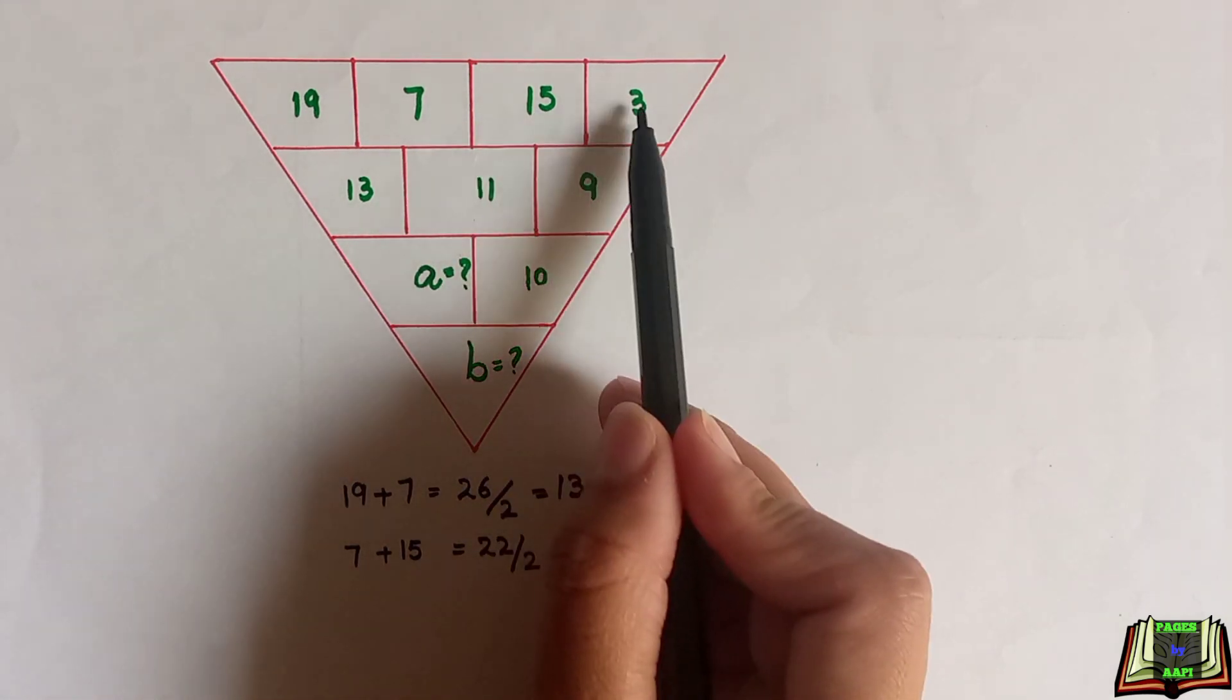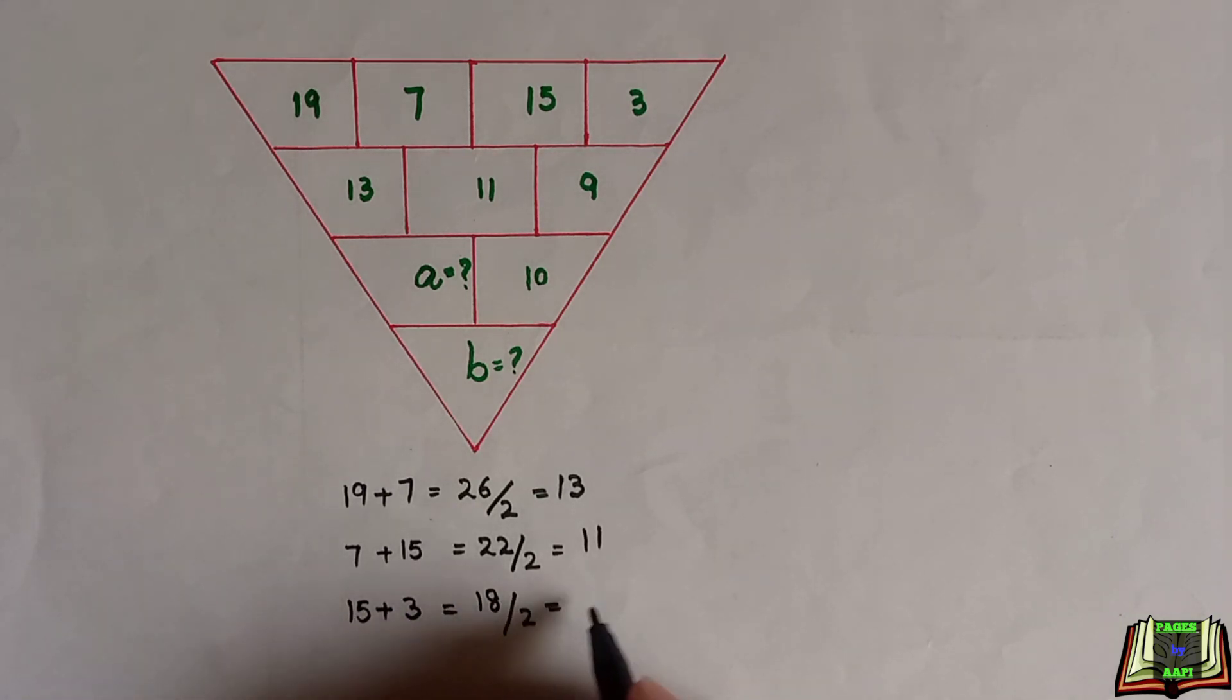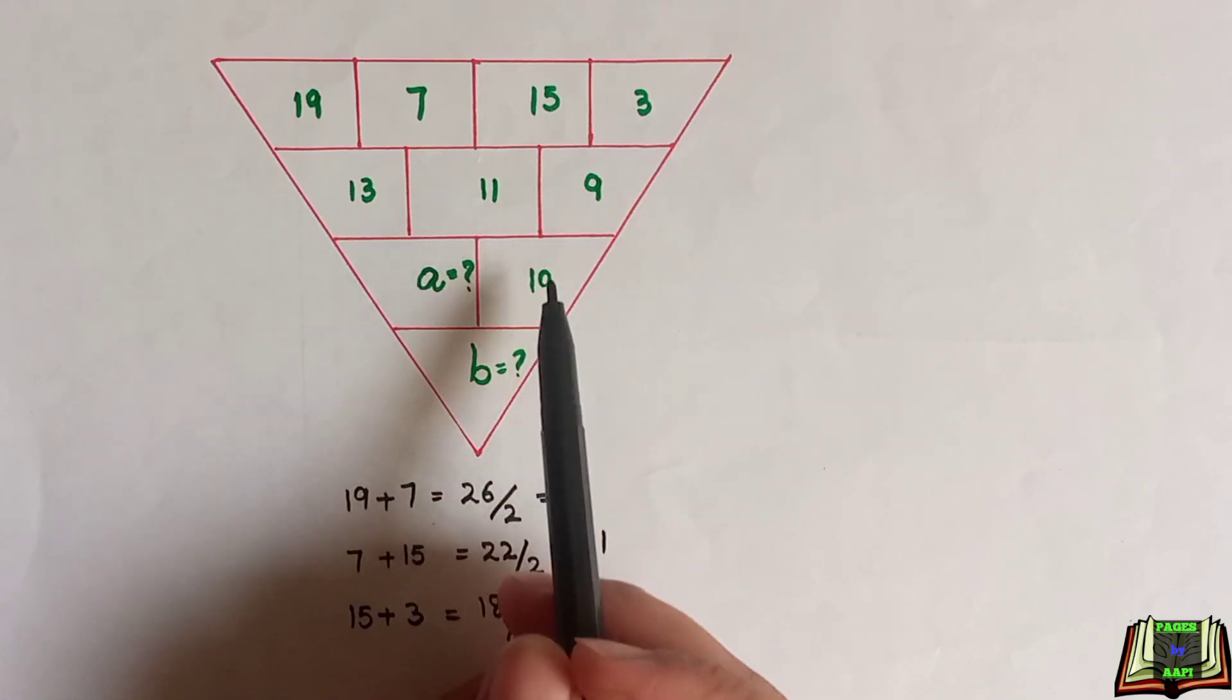Now we will check out the next one: 15 plus 3. 15 plus 3 equals 18, and then we divide it by 2. 18 divided by 2 equals 9, which is the same as given at the bottom.